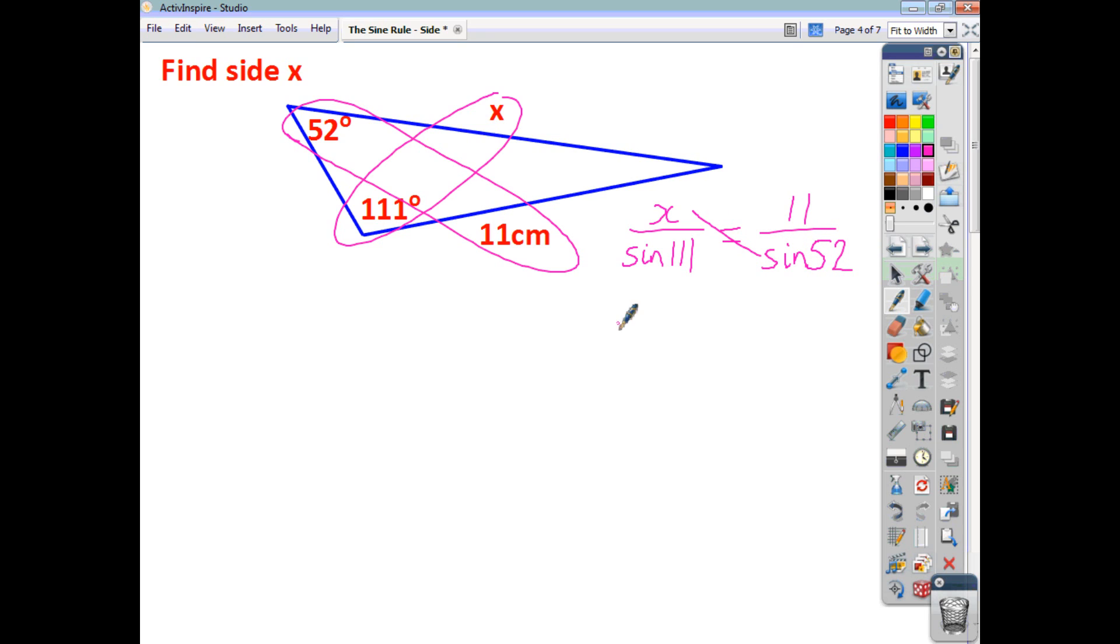Again, cross multiplication gives us that x times sine 52 is equal to 11 times sine 111. We rearrange to get x, dividing both sides by sine 52, we get that x is 11 sine 111 divided by sine 52. And that gives us an answer of 13, and it's 13 centimeters.